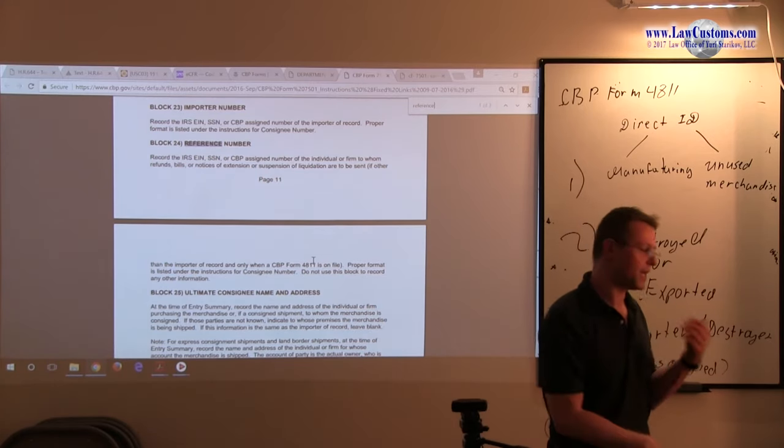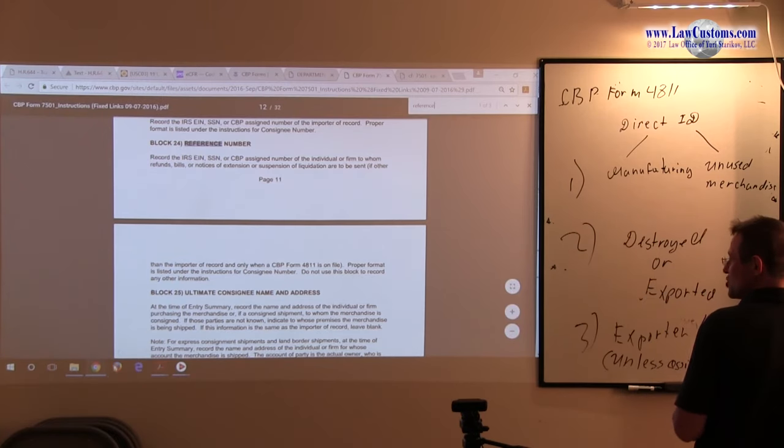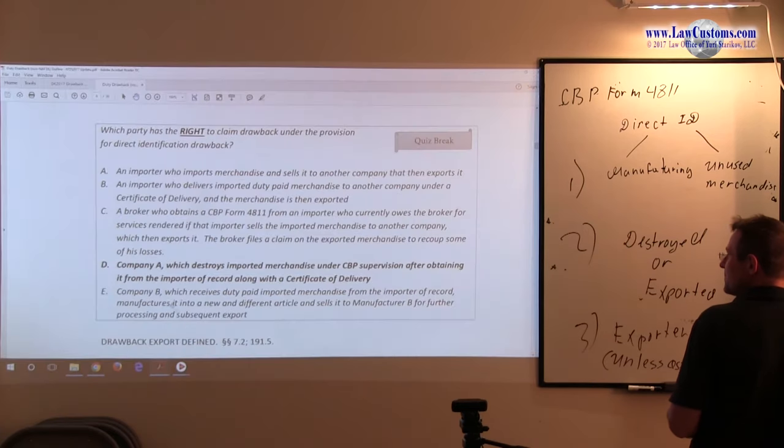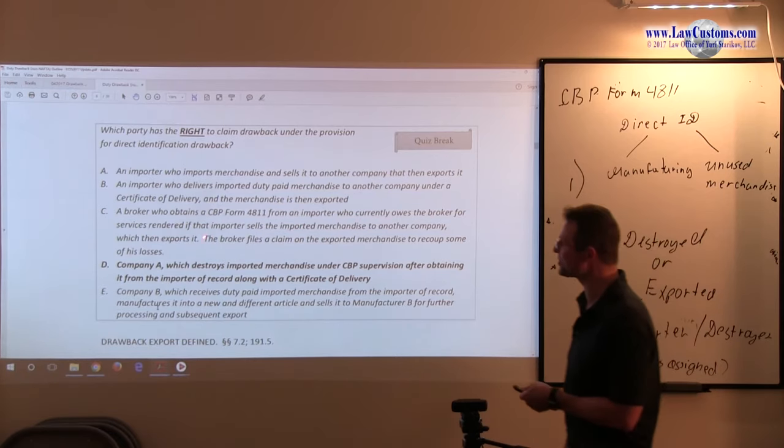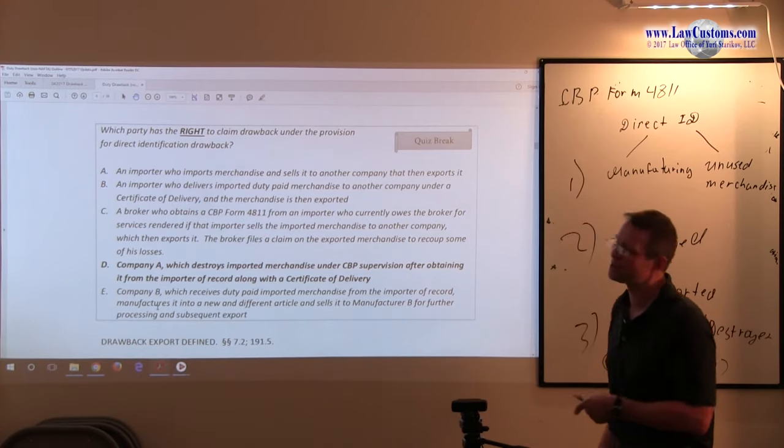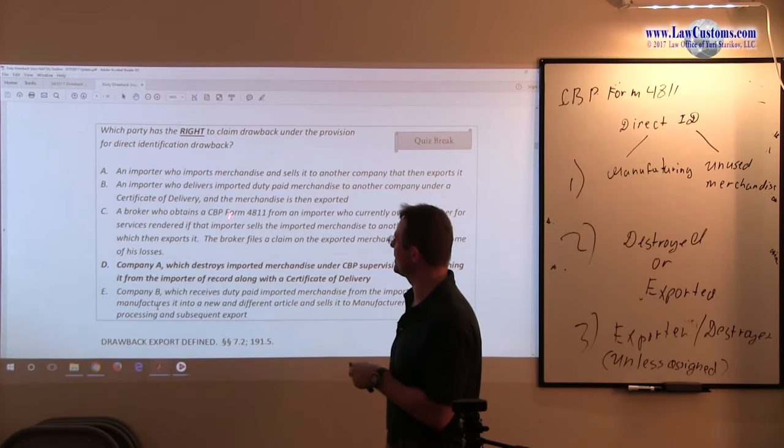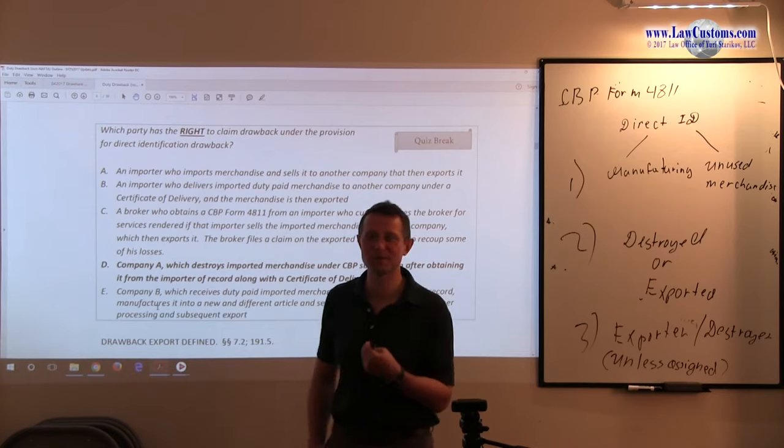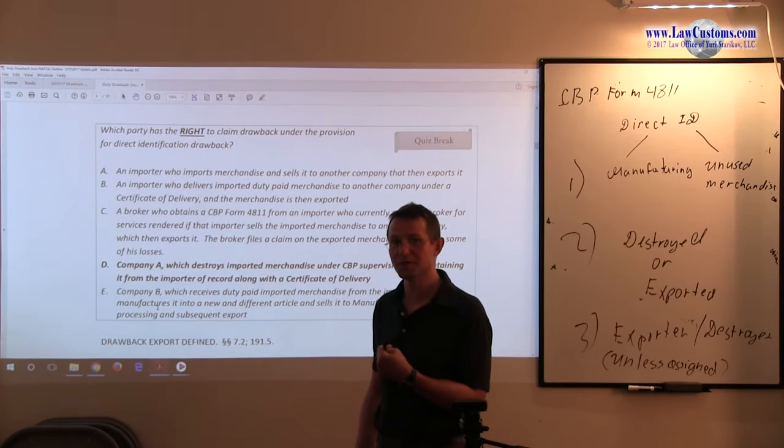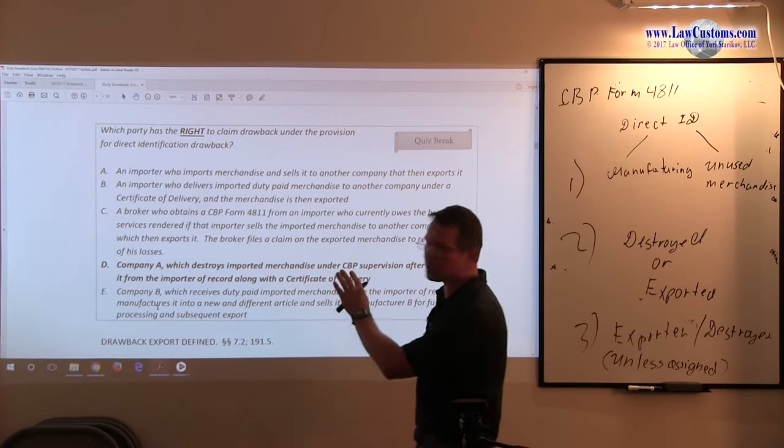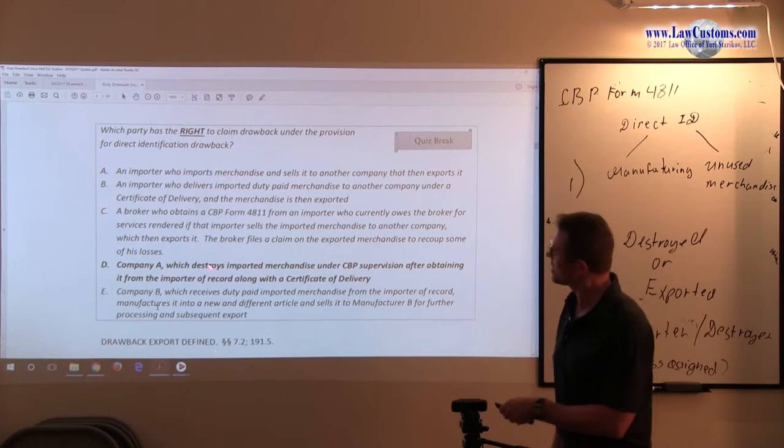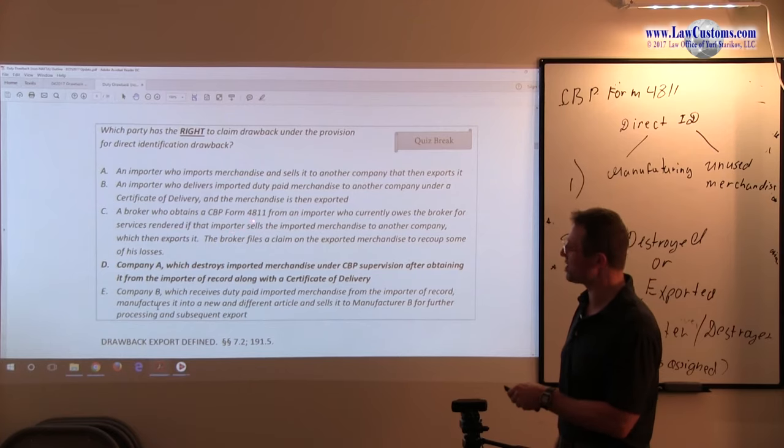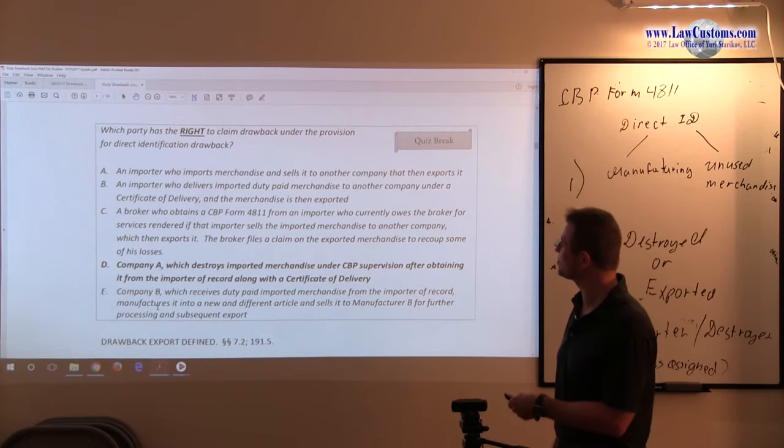Going back to the question we're analyzing: a broker who obtains CBP form 4811 from the importer who currently owes the broker for services rendered, if that importer sells the imported merchandise to another company—the broker says 'send me the money you owe me.' That's a problem because the money belongs to the client. But that's a separate issue. The broker files a claim on the exported merchandise to recoup some losses. Form 4811 is a reference, it's not the assignment. The money belongs to the importer.